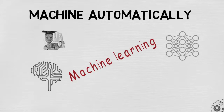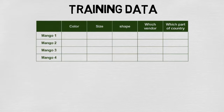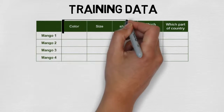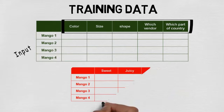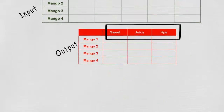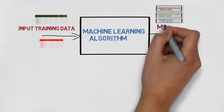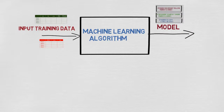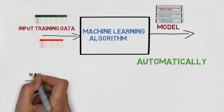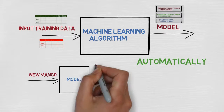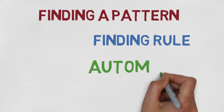A machine learning system will create such rules for us automatically. We supply a lot of training data about mangoes to the machine learning algorithm. This training data contains mango features like color, size, shape, which vendor sold it, and which part of the world it came from. We also have data about how sweet, juicy, and ripe each mango is. All this training data is fed into the machine learning algorithm, and it comes up with a model — essentially the rules we had manually extracted. When you go mango shopping next time, you apply your new mango to the model and it tells you whether the mango is juicy, sweet, and ripe. Machine learning is all about finding patterns and rules from observations and training data.